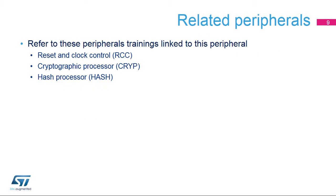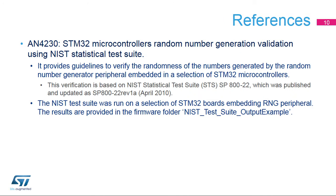This is a list of peripherals related to the random number generator. Please refer to the RCC, RNG Clock Control, and RNG Enable Reset for more information if needed. Please refer to CRIP or Hash Training if you want to know more about cryptographic engines. For more details, please refer to Application Note AN4230 about using the NIST Statistical Test Suite to validate the random numbers generated by a selection of STM32 MCUs.